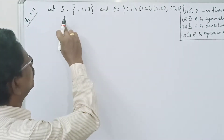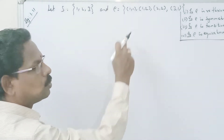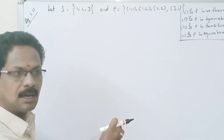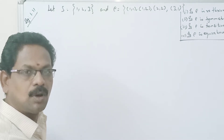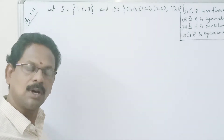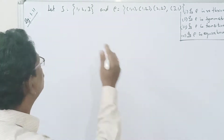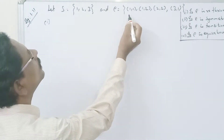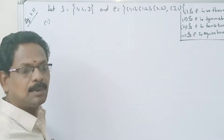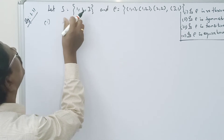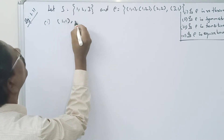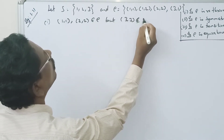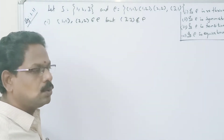Welcome. The relation R on the set {1,2,3} is given. We need to determine whether R is reflexive, symmetric, transitive, or an equivalence relation. For reflexive, we check the set {1,2,3}. R contains elements like (1,2), (2,2), (1,1) — so (1,1) and (2,2) belong to R, but (3,3) does not belong to R.